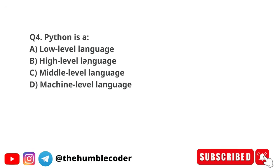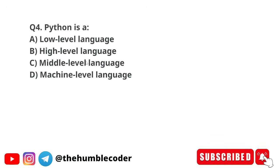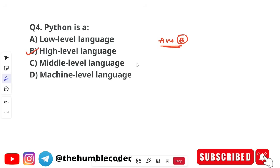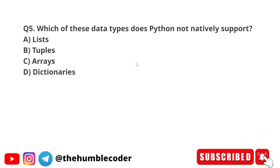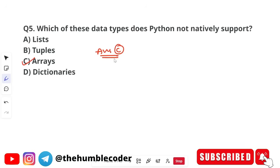Question 4: Python is which type of language? Options are low-level language, high-level language, middle-level language, and machine-level language. The correct answer is option B — high-level language. Python is a high-level programming language due to its natural language elements. Question 5: Which data type does Python not natively support? Options are lists, tuples, arrays, and dictionaries. The correct answer is option C — arrays. Arrays are not built into Python and require modules like array or numpy.